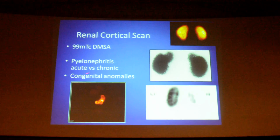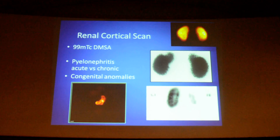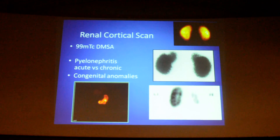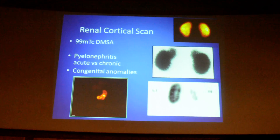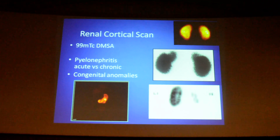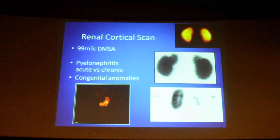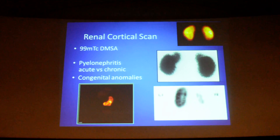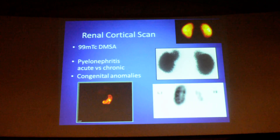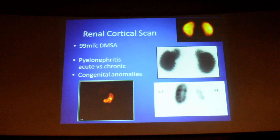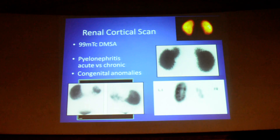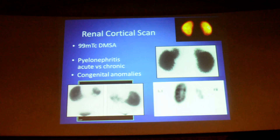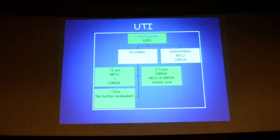Congenital anomalies can also be very well evaluated. You can see the fusion of the cortex — this is cross-fused ectopia, which Dr. Bharu was showing in the morning on CT urography. This is also a very cost-effective investigation, almost half the price of the other modalities. And this is a horseshoe kidney — you can see both moieties. So it can be used for congenital anomalies.